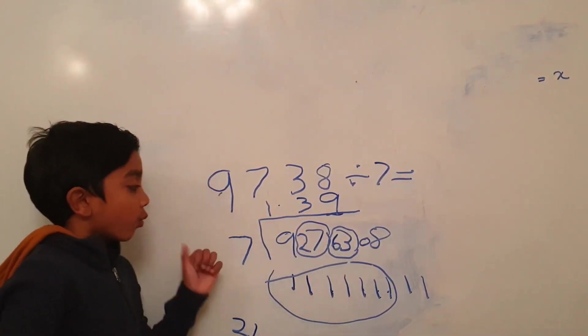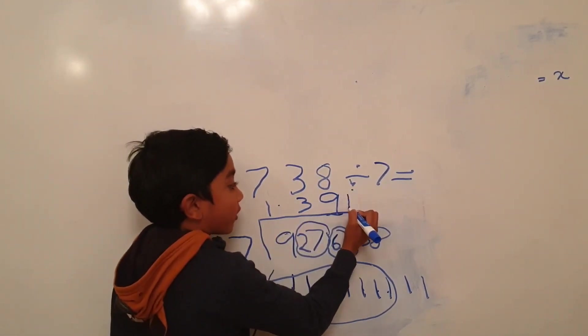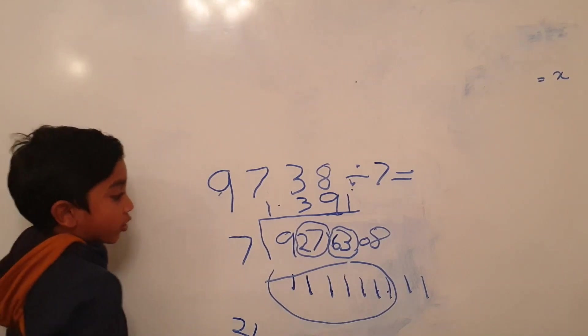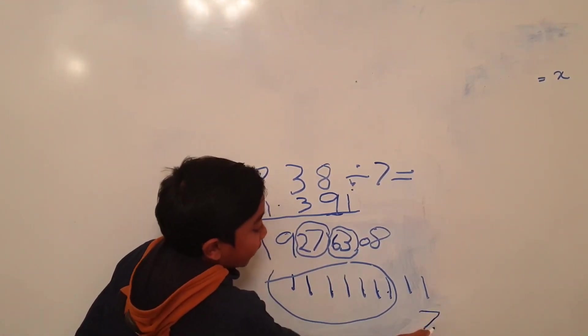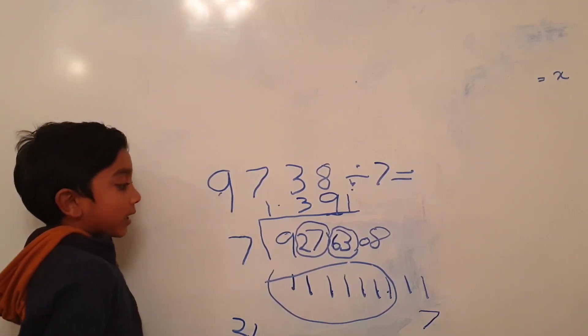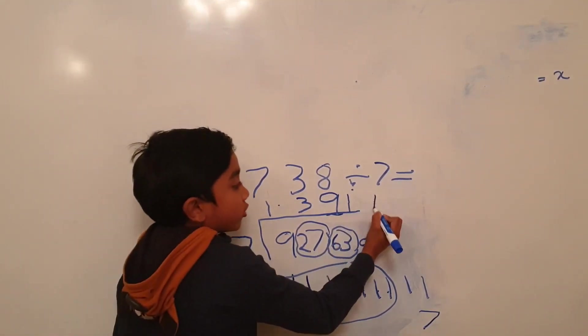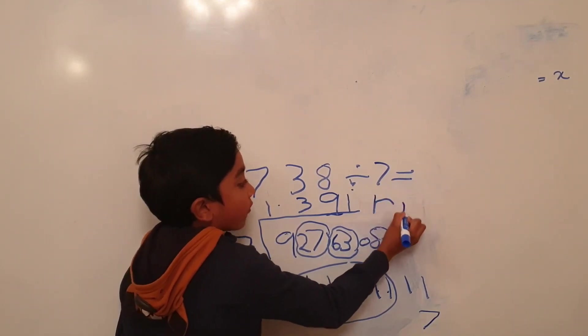How many 7s in 8? Seven, 1. So 1 goes on 8. So we write 7 over here. 7 got into the bus. How many remaining? 7, 8. So we write 1 here.